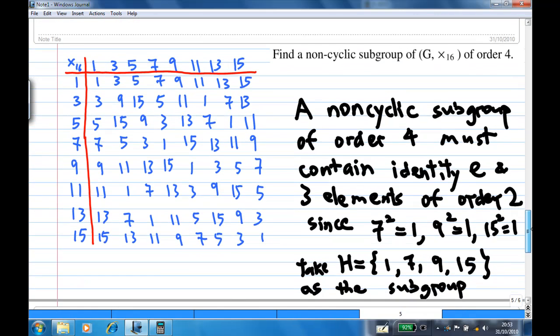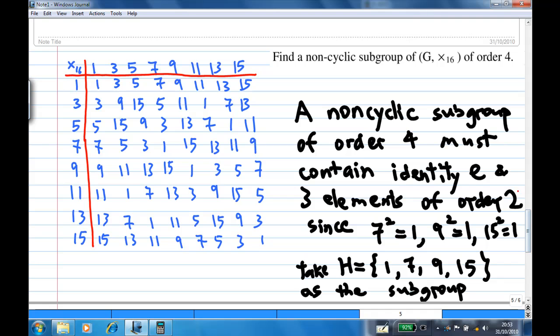Finally, the last part. We are going to find a non-cyclic subgroup of order 4. We know that a non-cyclic subgroup of order 4 must contain identity, 3 elements of order 2. And it cannot contain elements of order 4. Because once it contains elements of order 4, it will become cyclic. Since we know that 7 squared is 1, 9 squared is 1, 15 squared is 1. So we take H equal to {1, 7, 9, 15}. And this will be the non-cyclic subgroup of order 4 required.